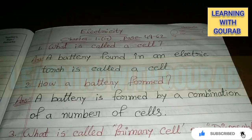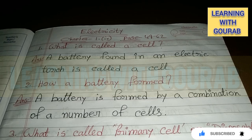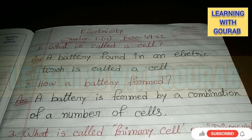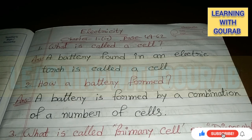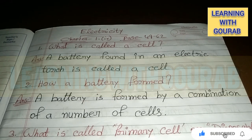That covers Class 7 English medium Science Chapter 1.4, page number 49 to 62, Electricity. All questions from this chapter have been covered. Please like and share the video and subscribe to the channel.